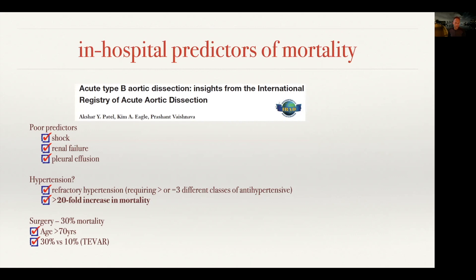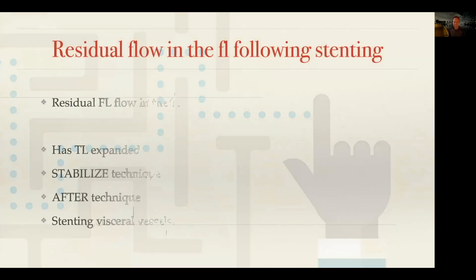In patients who come in with subacute dissection, there are some poor predictors of mortality. Even without malperfusion, patients who are shocked, have renal failure, or a pleural effusion on admission are high-risk. Patients with refractory hypertension have a very high mortality rate. If you can treat these patients in the subacute phase and re-establish good flow into the visceral vessels, that will hopefully help with their hypertension. Surgery carries very high mortality in this setting.